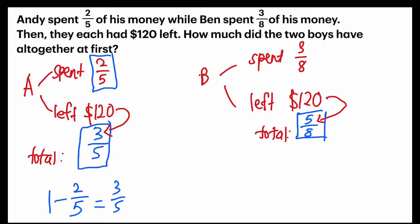I can do this in two steps. Let's go to Andy first. I will take 120 divided by 3 to find one unit, and then I multiply by 5. I will get my answer as 200.